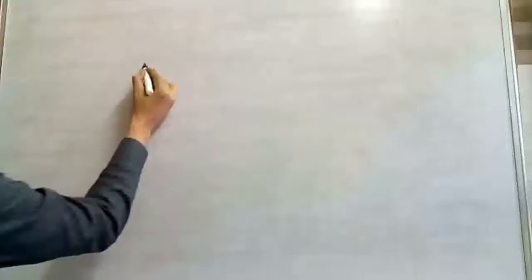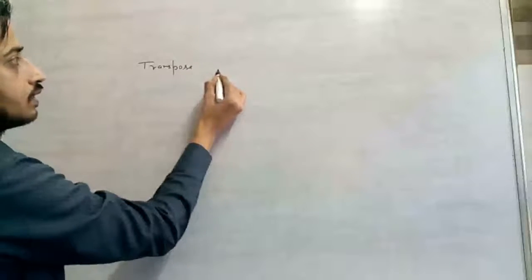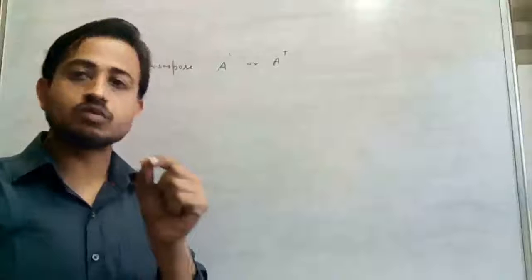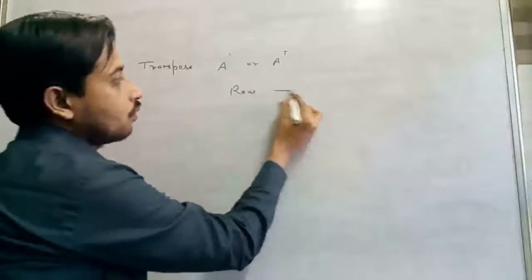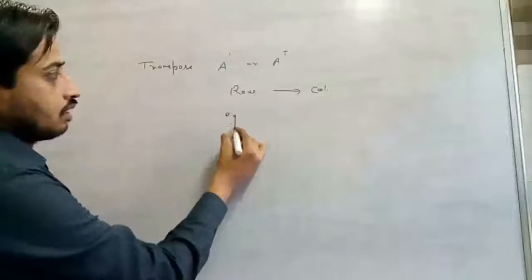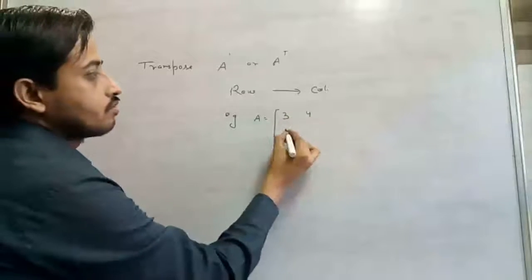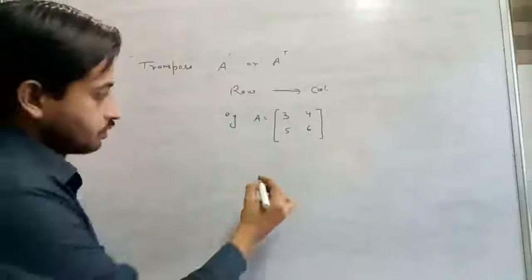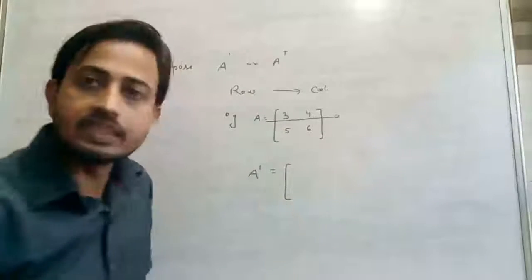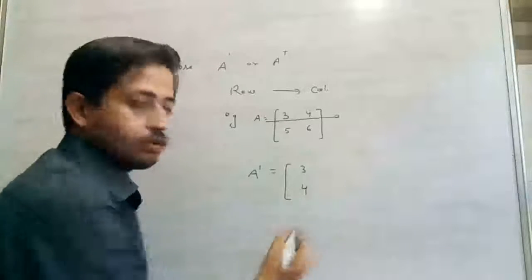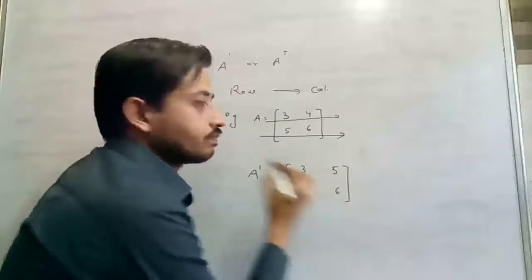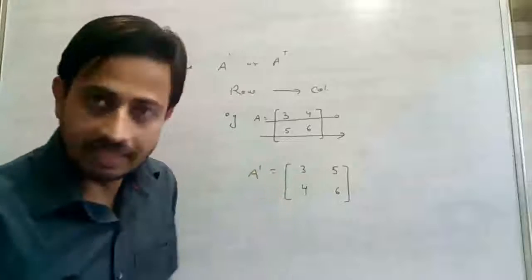To find the transpose: if A has elements 3, 4, 5, 6, we take the first row 3 and 4 and write it as a column, then take the second row 5 and 6 and write it as a column. This gives us the transpose of the matrix. Are you clear on my point?